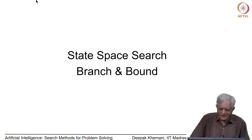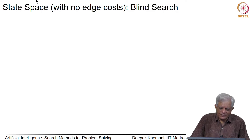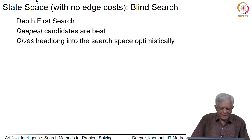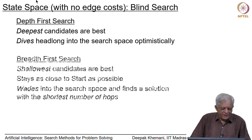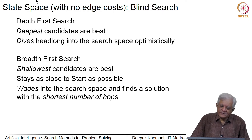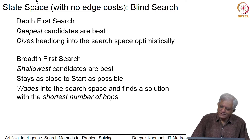We are moving on to state space search. So far we saw algorithms for blind search or uninformed search which had no edge cost involved. The first algorithm was depth first search where the deepest candidates are the best and it dives headlong into the search space. The conservative algorithm was breadth first search where the shallowest candidates are considered best, staying as close to the start as possible, wading into the search space layer by layer, which is why it guarantees finding the solution with the shortest number of hops.